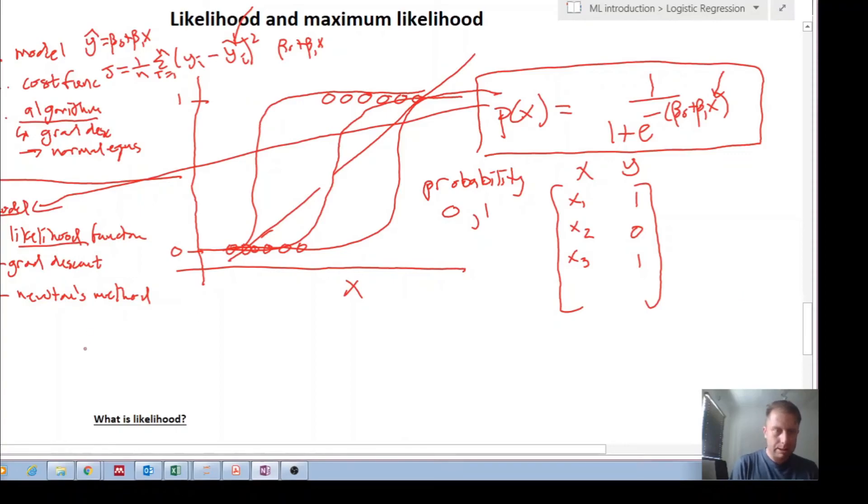...looks something like this: L of beta is equal to the product from i equals one to n of probability of xi to the power of yi, times one minus probability of xi to the power of one minus yi.